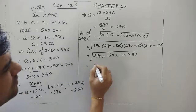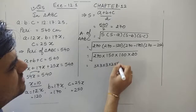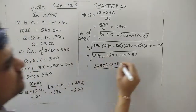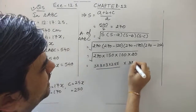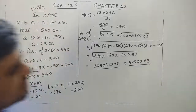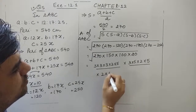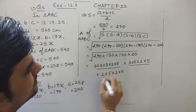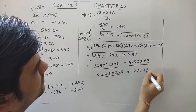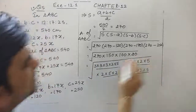Let us find the prime factors. 270 is 3 times 3 times 3 times 2 times 5. 150 is 3 times 5 times 2 times 5. 100 is 2 times 5 times 2 times 5. And 20 is 2 times 2 times 5. These are the prime factors of all four numbers.